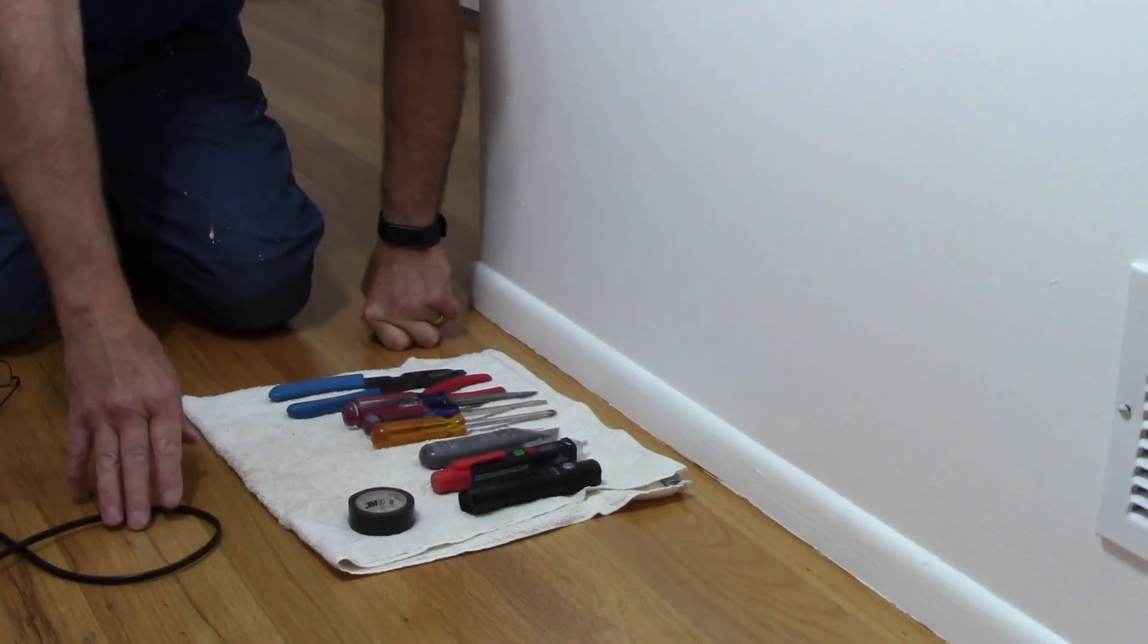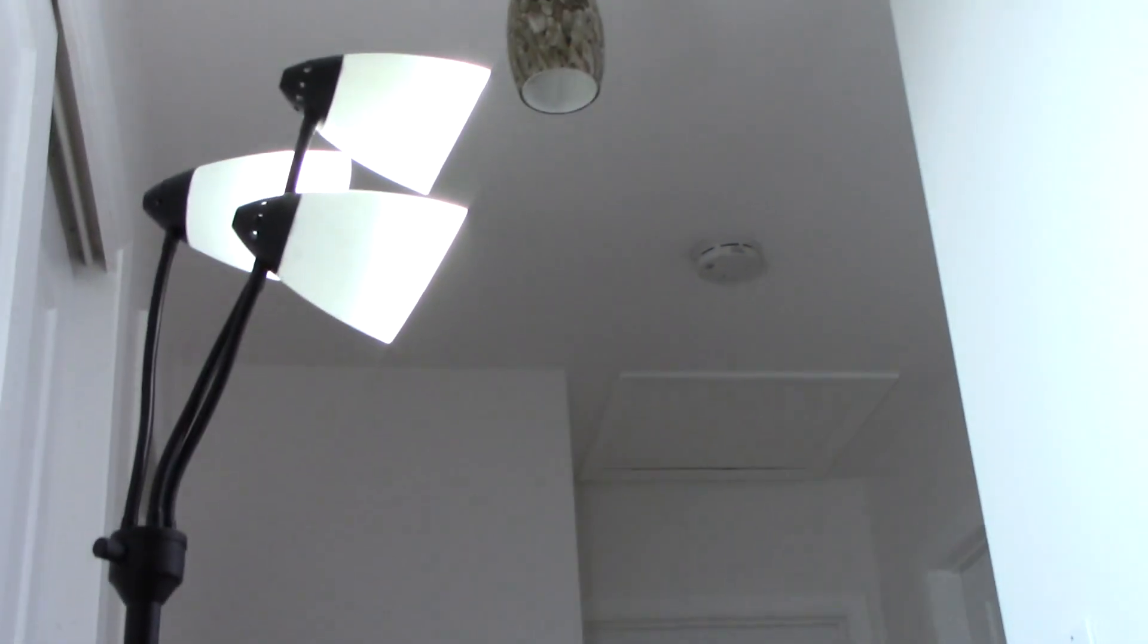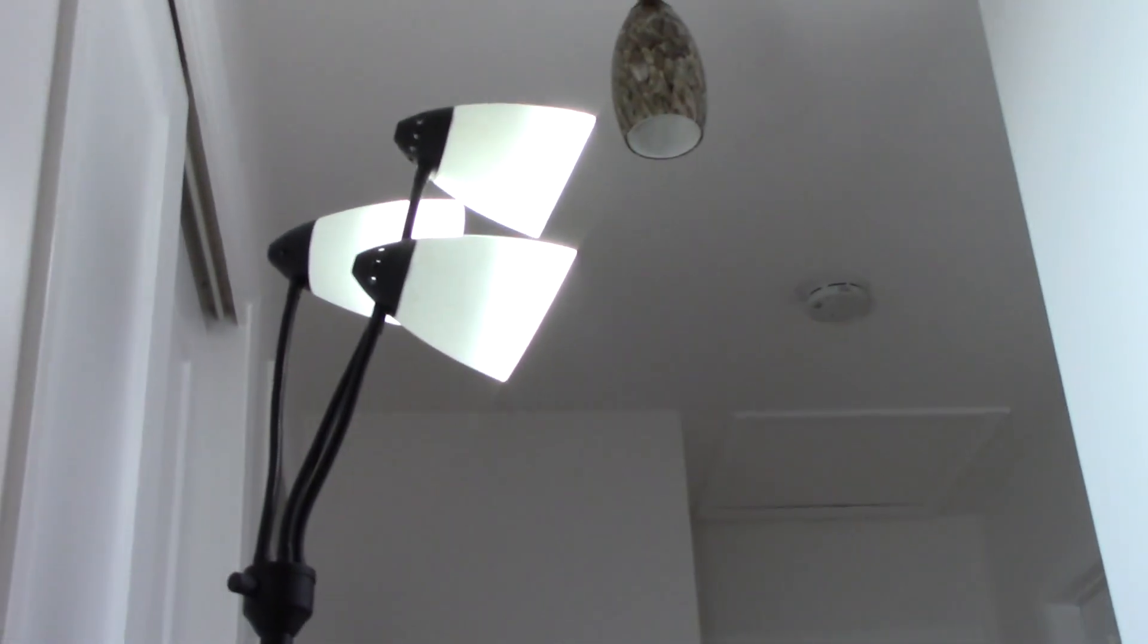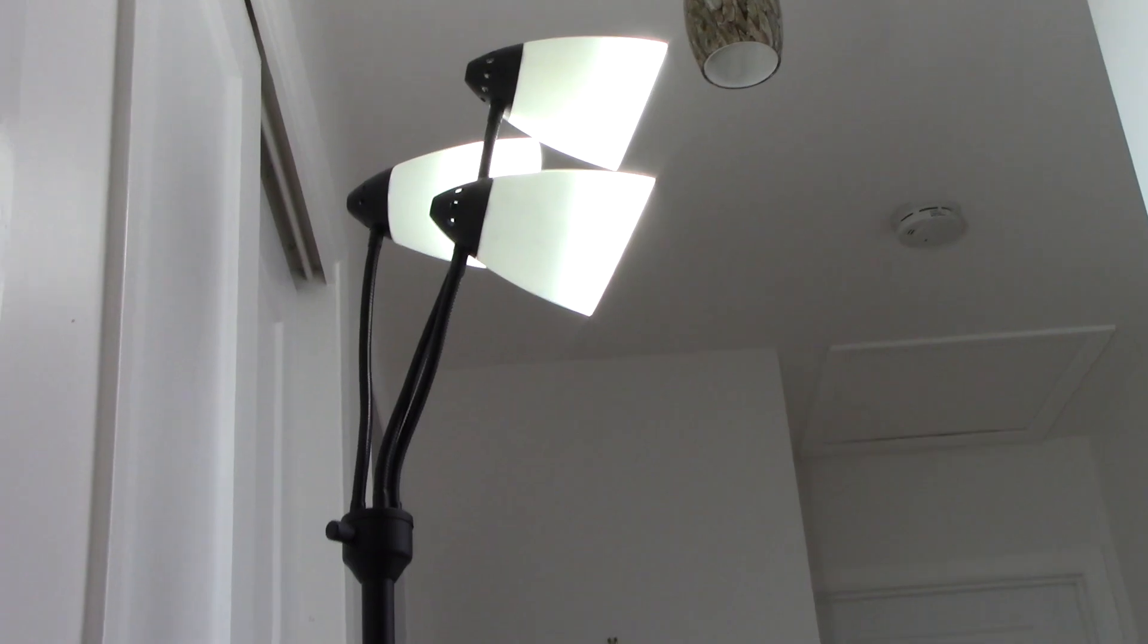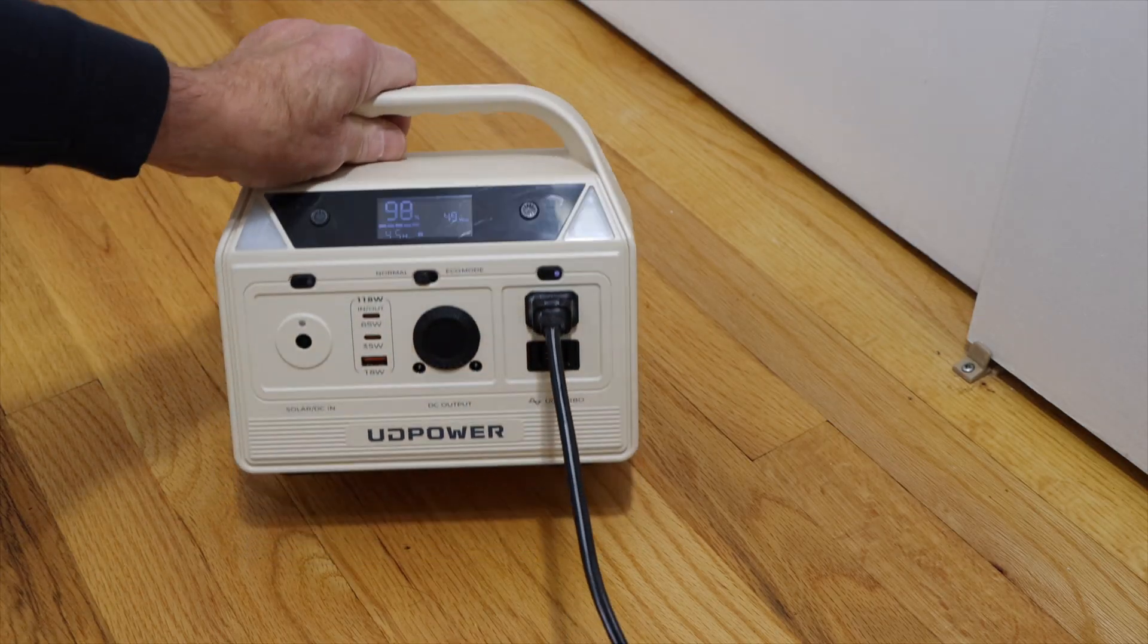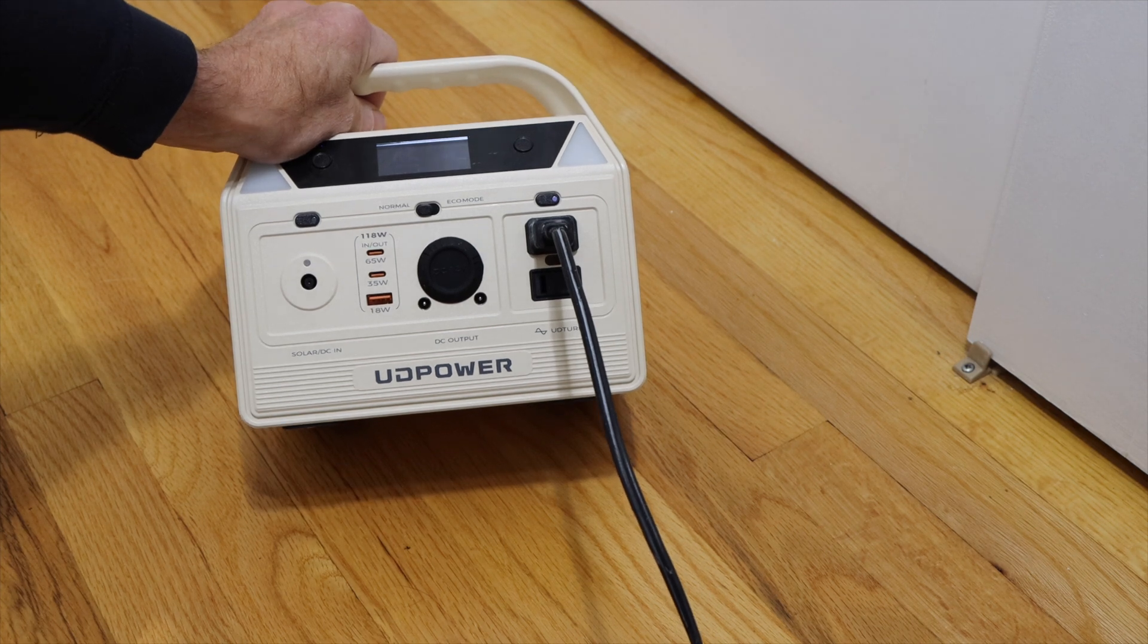Now you're probably wondering, how is this light here lit? And the way that we have it lit is it's not plugged into a regular household outlet. It's plugged into this box. Here is how we do it. When we turn the power supply off in the house, we need to have light so we can see what we're doing.